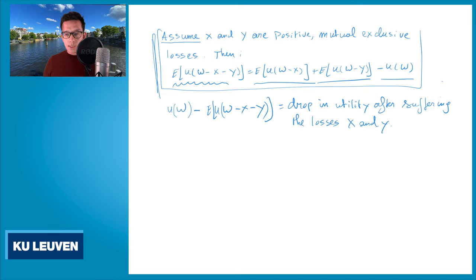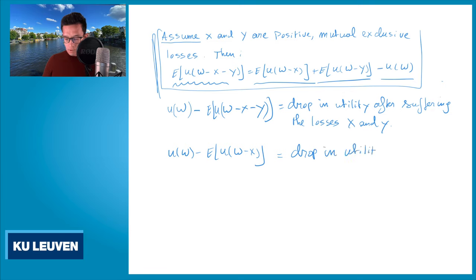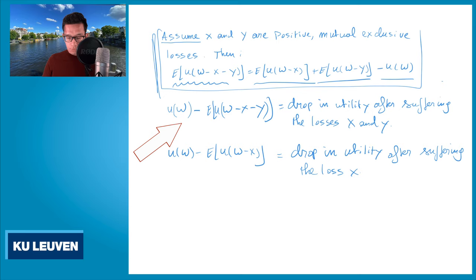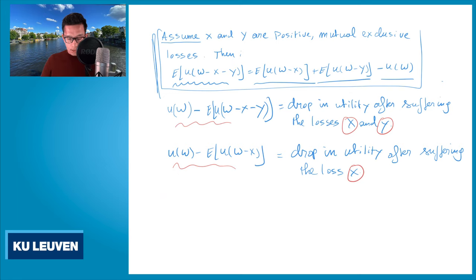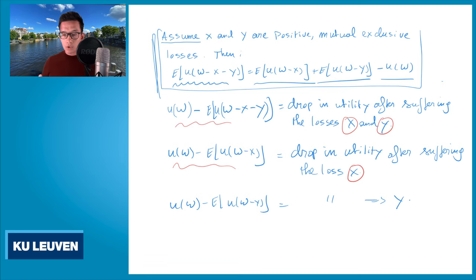Similarly, we can say that u(w) minus the expected utility u(w-x) is the drop in utility when you only suffer the loss x. You can also look at u(w) minus the expectation u(w-y), which is your drop in utility when you suffer the loss y.